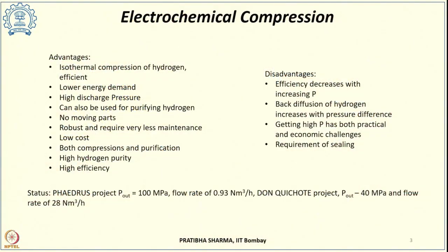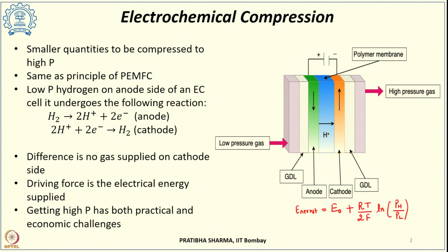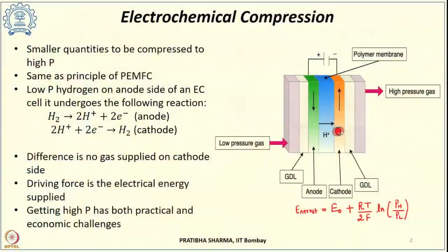The major challenges are both practical and economic when seeking high pressures. As pressure increases, the Nernst voltage becomes almost of the same order of magnitude as the ohmic losses, and the efficiency decreases. Furthermore, if we increase the pressure further, the permeation of hydrogen from the cathode side back onto the anode side — a process known as back diffusion — will also increase.